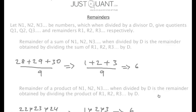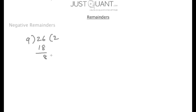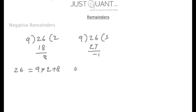So here we have looked at the remainder of a product and the remainder of a sum of n numbers. Let us now see the concept of negative remainders. Consider 26 when divided by 9: it gives us a remainder of 8. But I can also write 26 as 9 times 3 minus 1, which means 26 when divided by 9 also gives a remainder of minus 1. This idea of a negative remainder is pretty useful in calculating certain remainders.